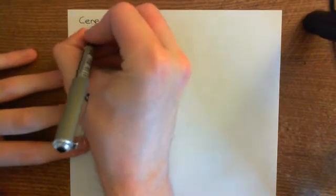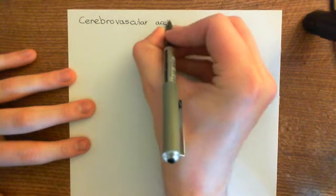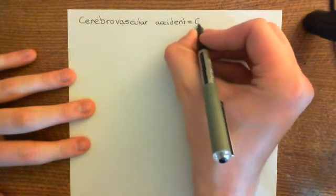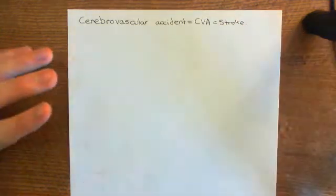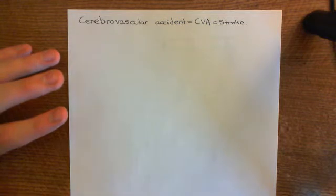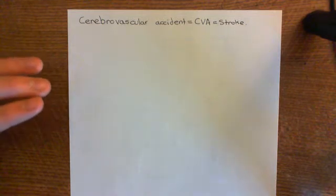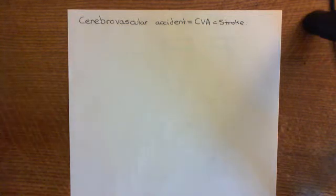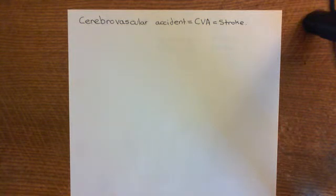A cerebrovascular accident, or CVA — the more common name for a cerebrovascular accident is merely to call it a stroke. Basically, a portion of the brain will die. When a portion of the brain dies, this can have numerous effects depending on which portion dies. If somewhere involved in the motor system dies, you'll have motor deficits. If somewhere involved in the sensory portions of the brain dies, you'll have sensory deficits. If somewhere in the prefrontal cortex dies, you'll have cognitive deficits. There are a huge number of deficits that can occur due to stroke. So thrombosis is very, very dangerous.